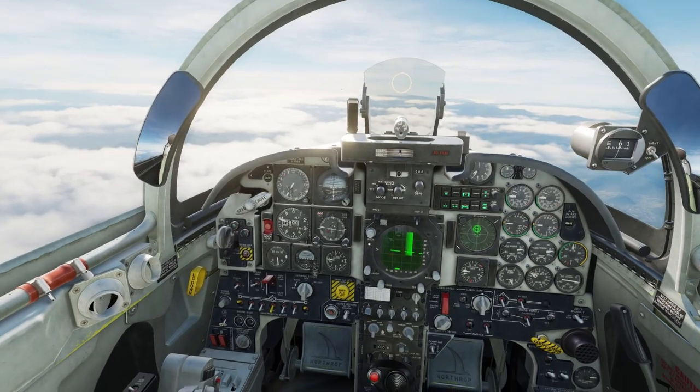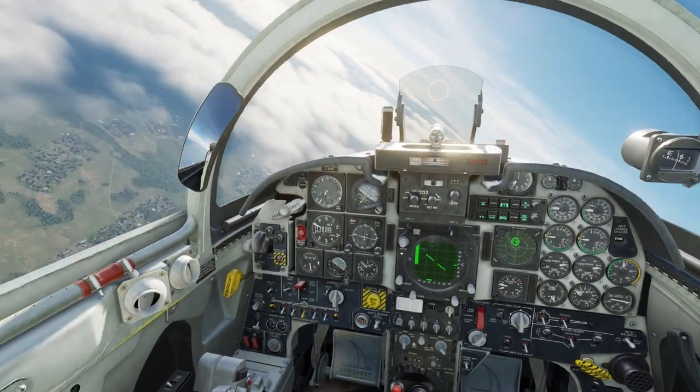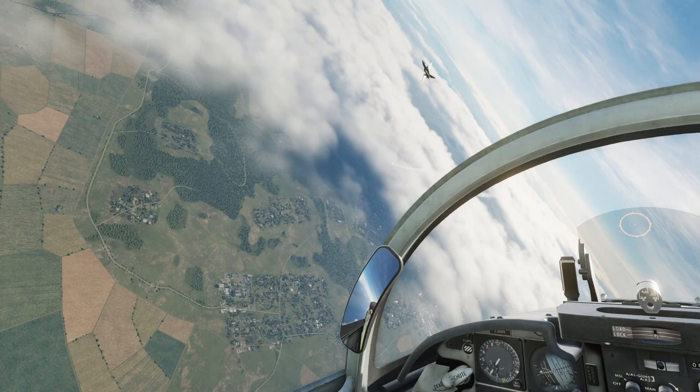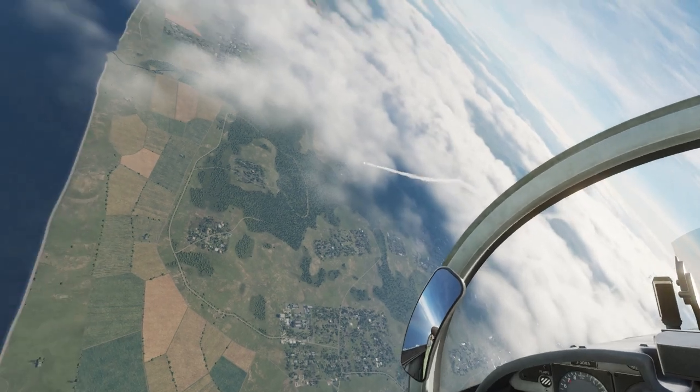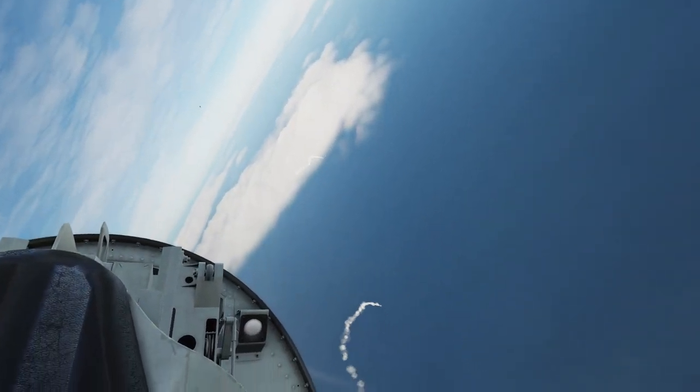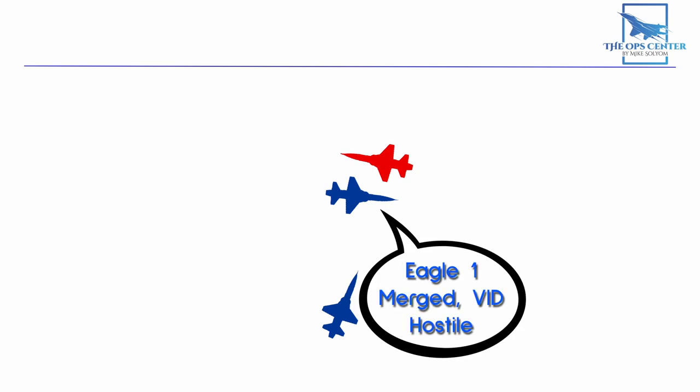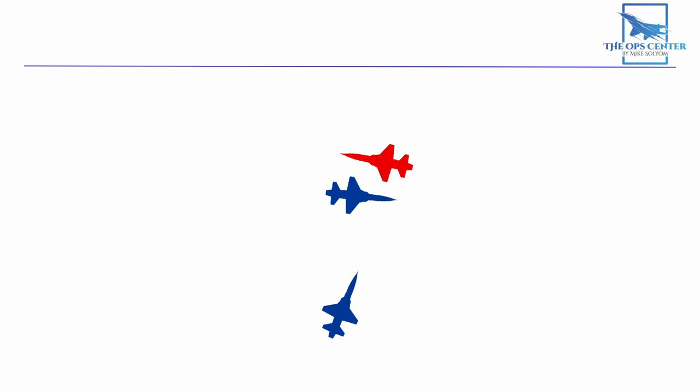With Eagle-1 as the engaged fighter, it's going to be his responsibility to make the call. Here at the merge, we now clearly see that this bogey is not only carrying our adversaries' markings, but he's armed too. That's enough to satisfy the rules of engagement. Now we need to communicate that fact. In ACM, you can call a merge and a VID separately, but they can happen at the same time, too. So it's okay to combine them like this. Eagle-1 merged VID hostile. With that VID of a hostile aircraft, we now have authorization to shoot. It also means we'll refer to that aircraft as a bandit instead of a bogey from now on.